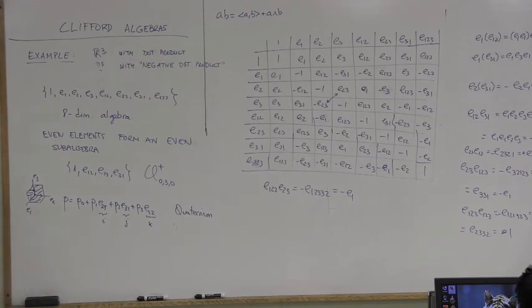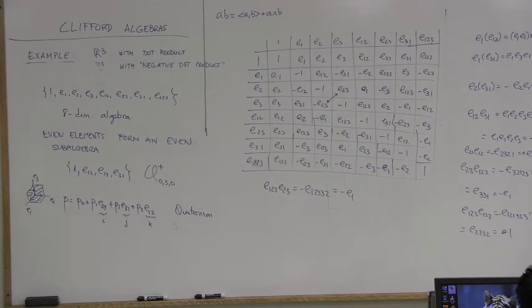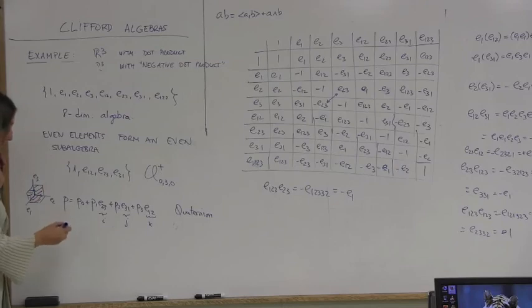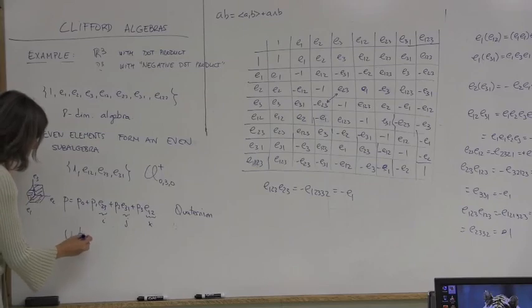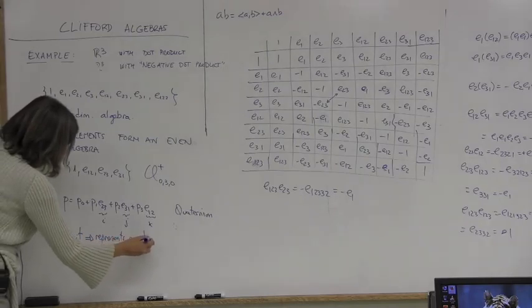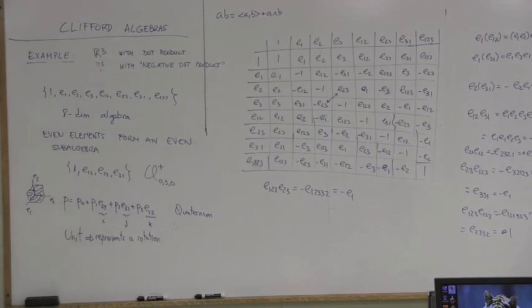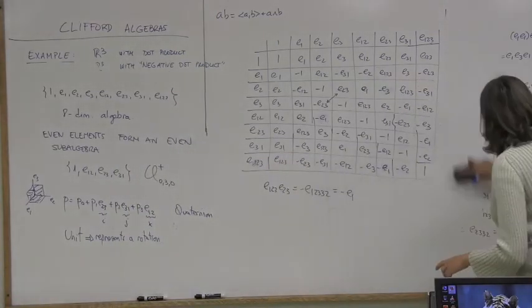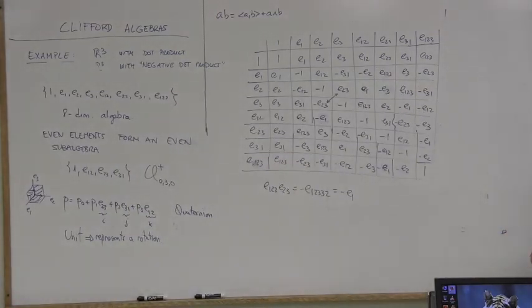So you can think of a quaternion not as coming from nowhere, but as an element of the even subalgebra of R3. A quaternion in general has four elements. If it's a unit quaternion, it represents a rotation. We have the rotation as an element of the Clifford algebra and the vector as an element of the Clifford algebra, and you can operate them together.